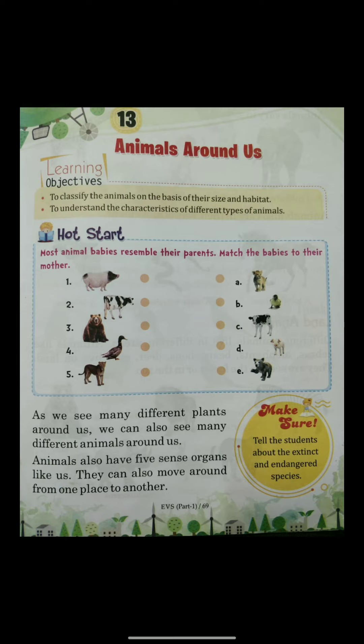Animals also have five sense organs like us. We have five sense organs — eyes, nose, tongue, skin, and ear. Similarly, animals also have these five sense organs like us. And they can also move around from one place to another.